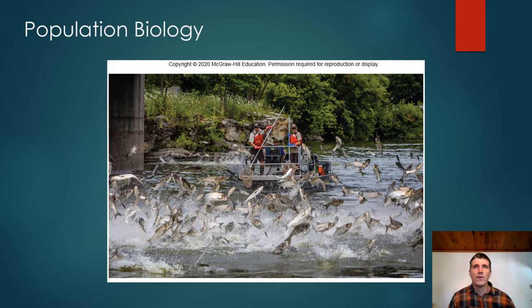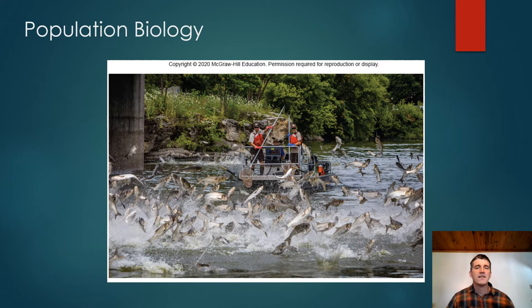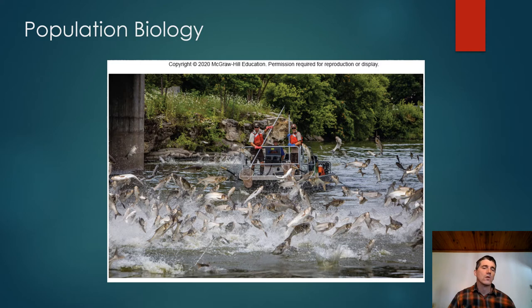Today we're talking about population biology. Throughout this course, we hear a lot about environmental issues that go hand-in-hand with an increasing human population. Today we'll also talk about increasing animal populations and rates of change in animal populations. This image here shows an invasive type of fish — Asian carp in the Midwest. We have these in Missouri. These fish have been around for about 25 years or so, and their populations have really exploded. They're an invasive species, meaning they come from a different part of the world where they have natural predators that keep their population in check — which we don't have here.